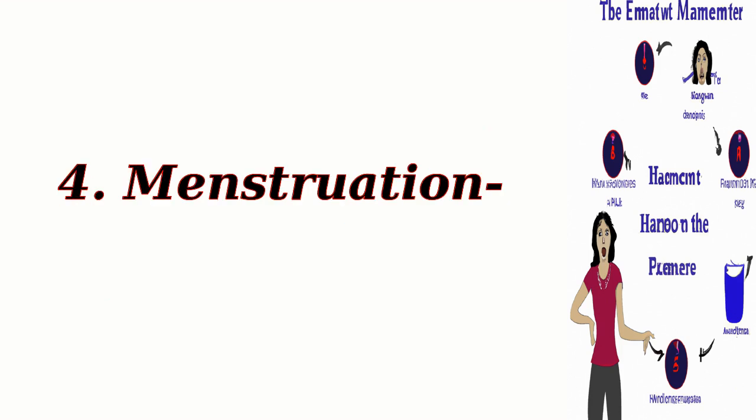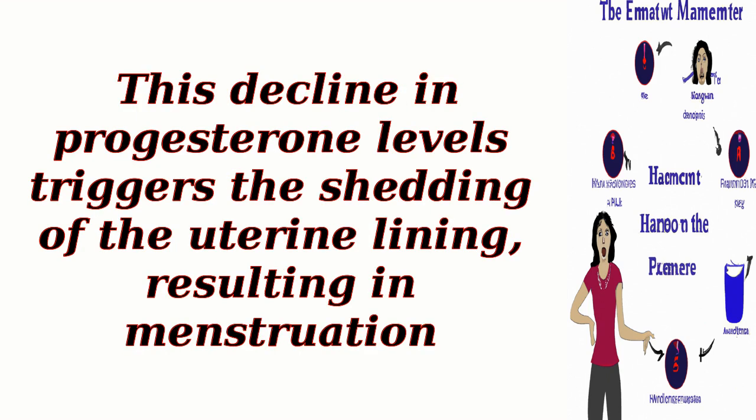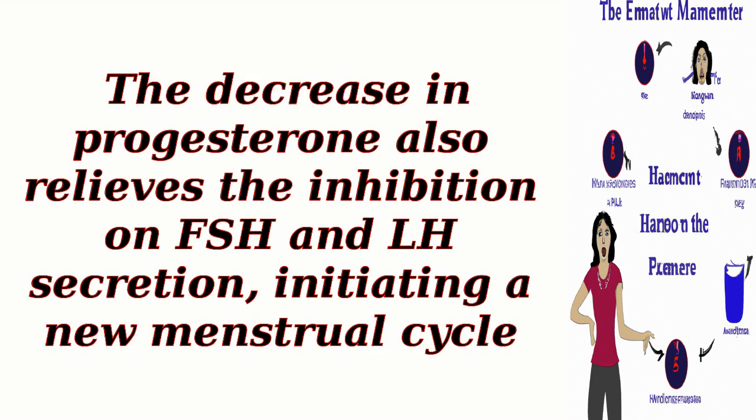4. Menstruation. If fertilization and implantation do not occur, the corpus luteum stops producing progesterone. This decline in progesterone levels triggers the shedding of the uterine lining, resulting in menstruation. The decrease in progesterone also relieves the inhibition on FSH and LH secretion, initiating a new menstrual cycle.